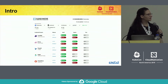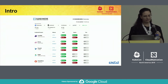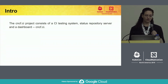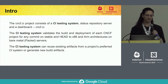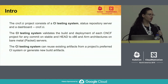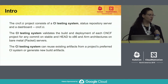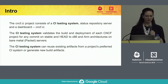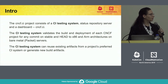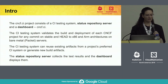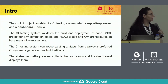At a glance, this is CNCF-CI. The project consists of a CI testing system, a status repository, and a user-facing dashboard. The CI testing system can use existing build status from a project CI system like Travis CI or even GitHub Actions, and it can generate its own build status and artifacts. We validate the build and deployment status of each project on Kubernetes stable and head on x86 and ARM architectures on packet servers. The status repo collects the results and then the dashboard displays them.